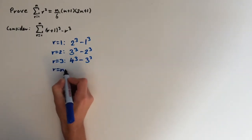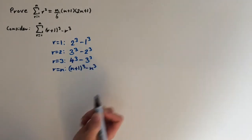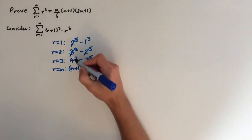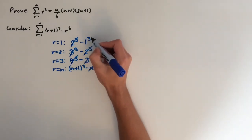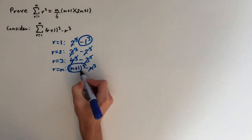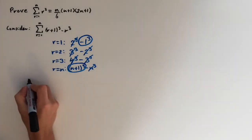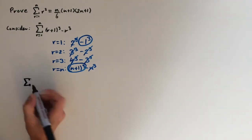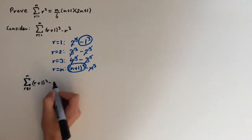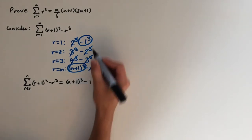For the nth term, when r equals n, this will be n plus 1 cubed minus n cubed. You can see that some of these terms are going to cancel out — the 2 cubes cancel, the 3 cubes cancel, and this pattern goes on for the whole series, so all the middle terms cancel out. What we're left with is the minus 1 cubed at the start and the n plus 1 cubed at the end. So the sum of the series equals n plus 1 cubed minus 1, because 1 cubed is just 1.